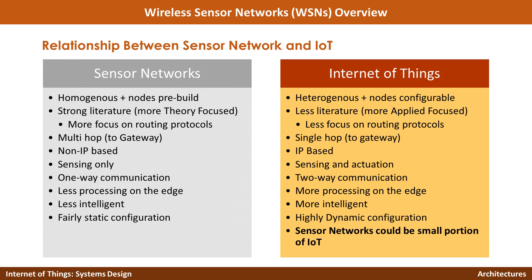Sensor networks are less intelligent — the primary objective is to sense and deliver data to the person who deployed them, who will then analyze and make decisions. The sensor network is a fairly dumb infrastructure. In Internet of Things, the sensor nodes are supposed to be intelligent — in terms of context, energy, and varying requirements — because you can remotely configure them. In sensor networks, by the time you deploy, you know pretty much what you want to do. But in IoT, you might want to change the approach and reconfigure or reprogram it remotely.